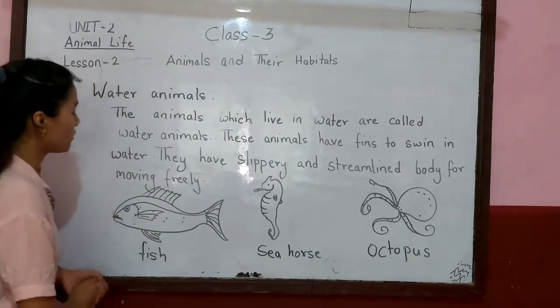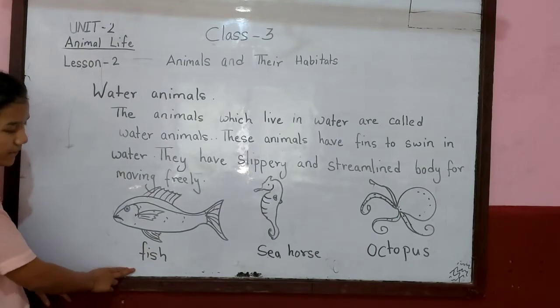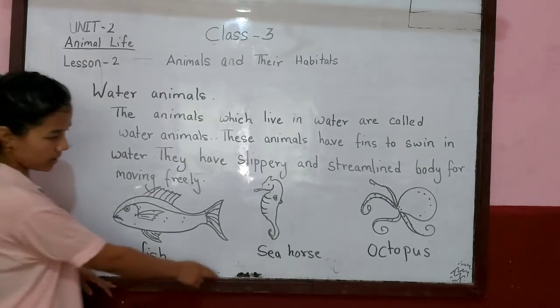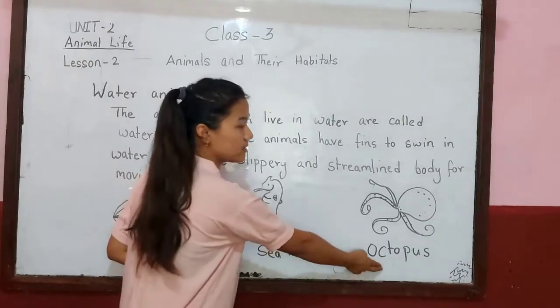You can also see some examples of water animals: fish, seahorse, octopus.